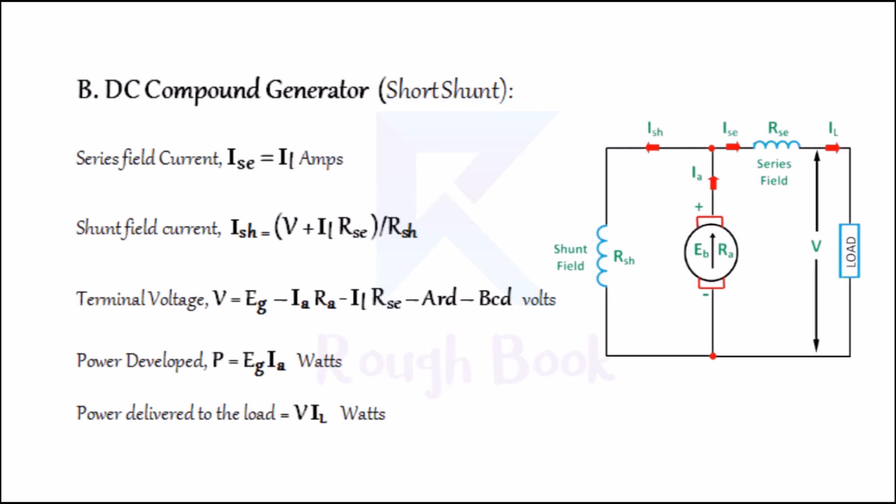8B: Short shunt DC compound generator. Depending on how the series field winding is connected to the shunt field winding, this is a short shunt DC compound generator as shown in the figure. Series field current ISE = IL. Shunt field current ISH = (V + IL × RSE) / RSH. Armature current IA = IL + ISH. Terminal voltage V = EG − IA × RA − IL × RSE − armature reaction drop − brush contact resistance drop in volts. Power developed P = EG × IA in watts. Power delivered to the load = V × IL in watts.